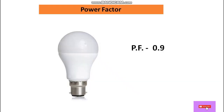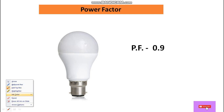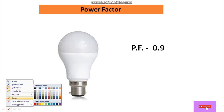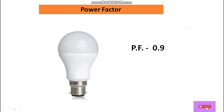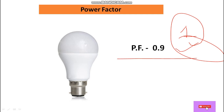Now coming to power factor — we always go for a higher value of power factor. As you know, the maximum power factor value is 1, so we always go for a value near to 1. A value of 0.99 is better.